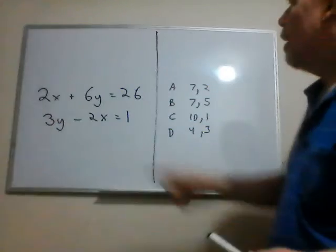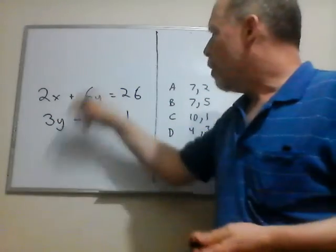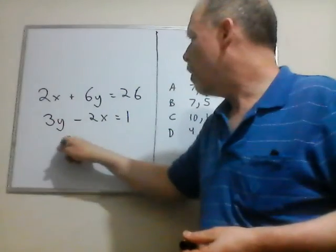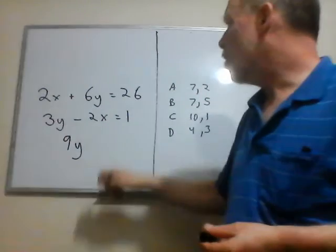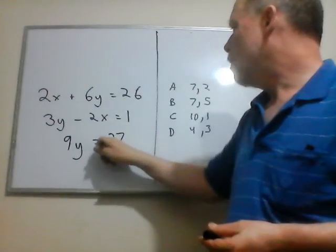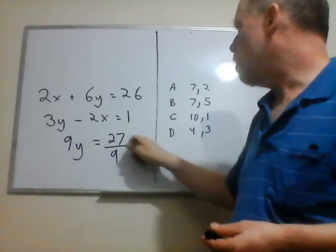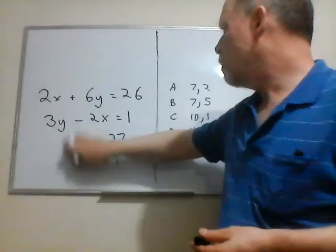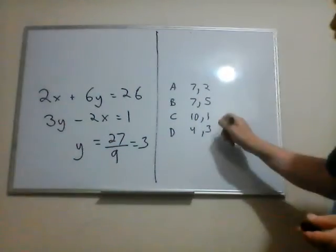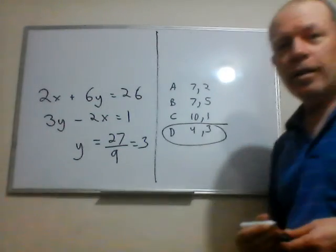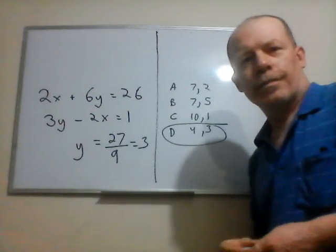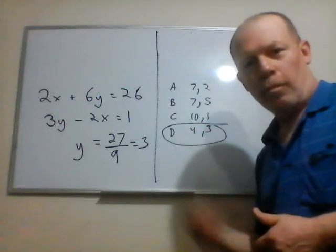Okay, so what if we just do it? What if we just add it together? 9y, the x's cancel. So 27 divided by 9 equals 3. Okay, and you're done. X is 4. That's great. Nobody cares. Mark it and move on.